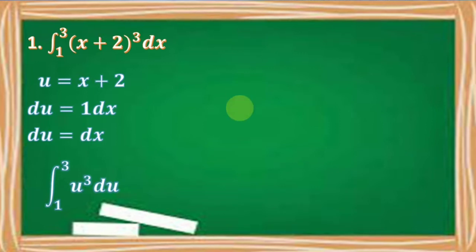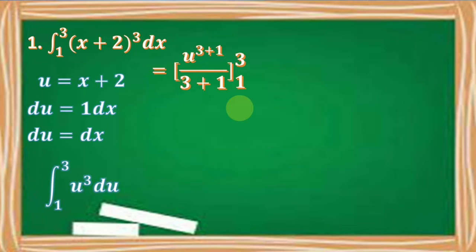Getting the antiderivative of u cubed, it becomes u raised to 3 plus 1 over 3 plus 1 from 1 to 3. Adding the numbers in our exponent and in the denominator, we have u to the 4th over 4 from 1 to 3.